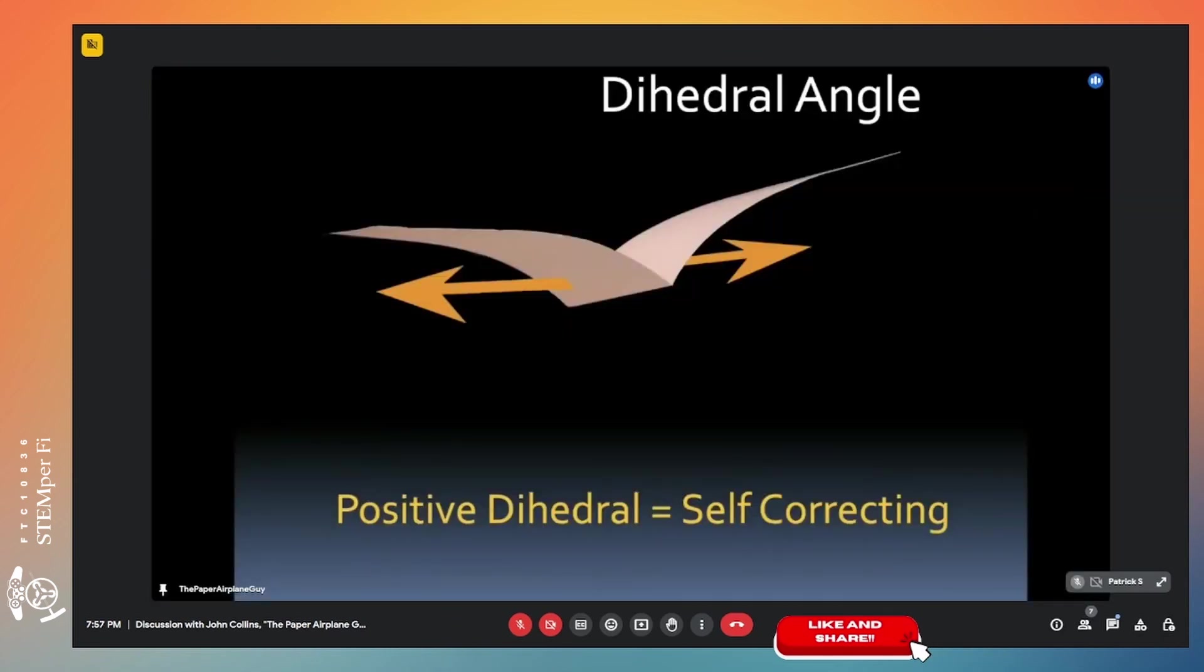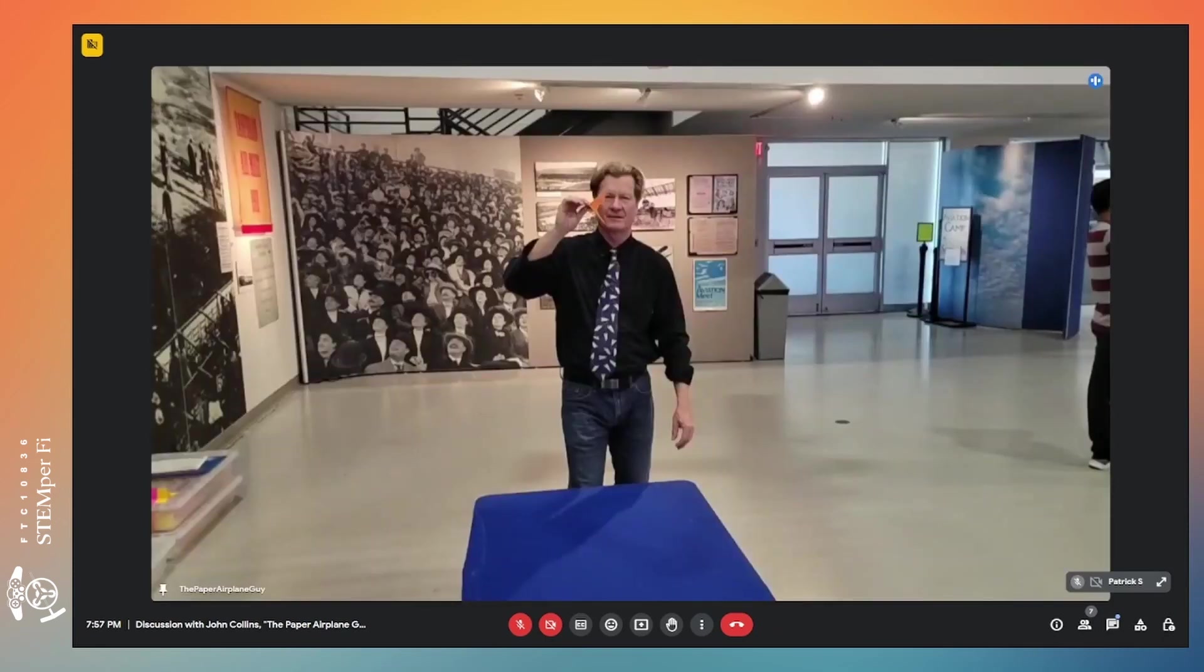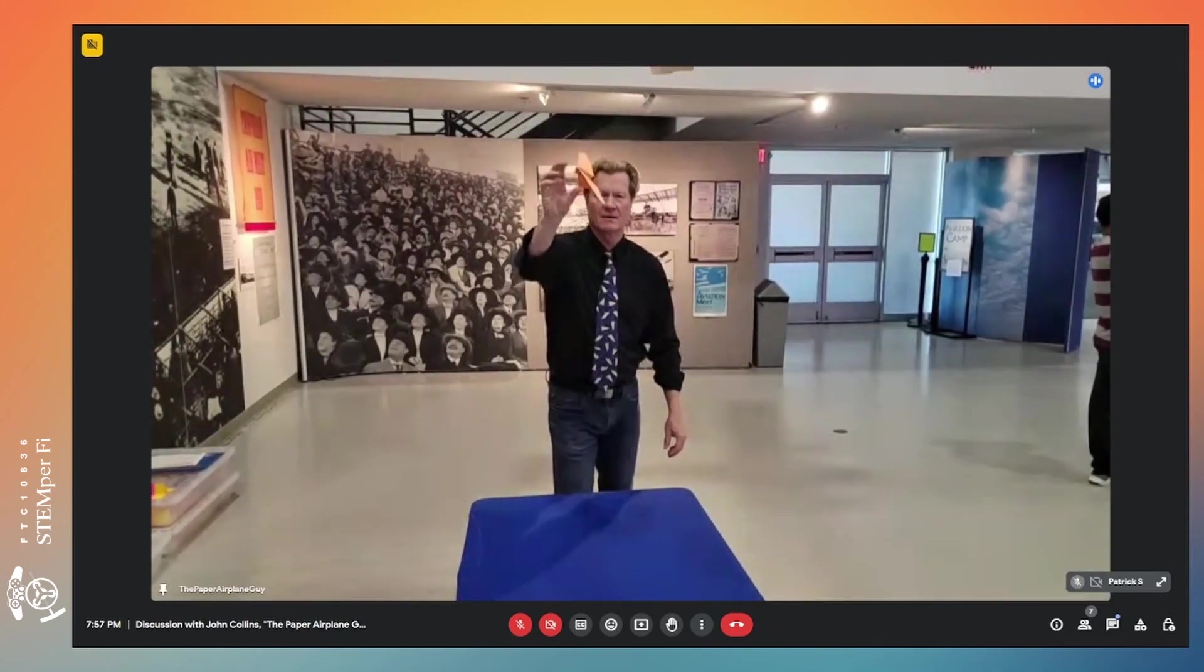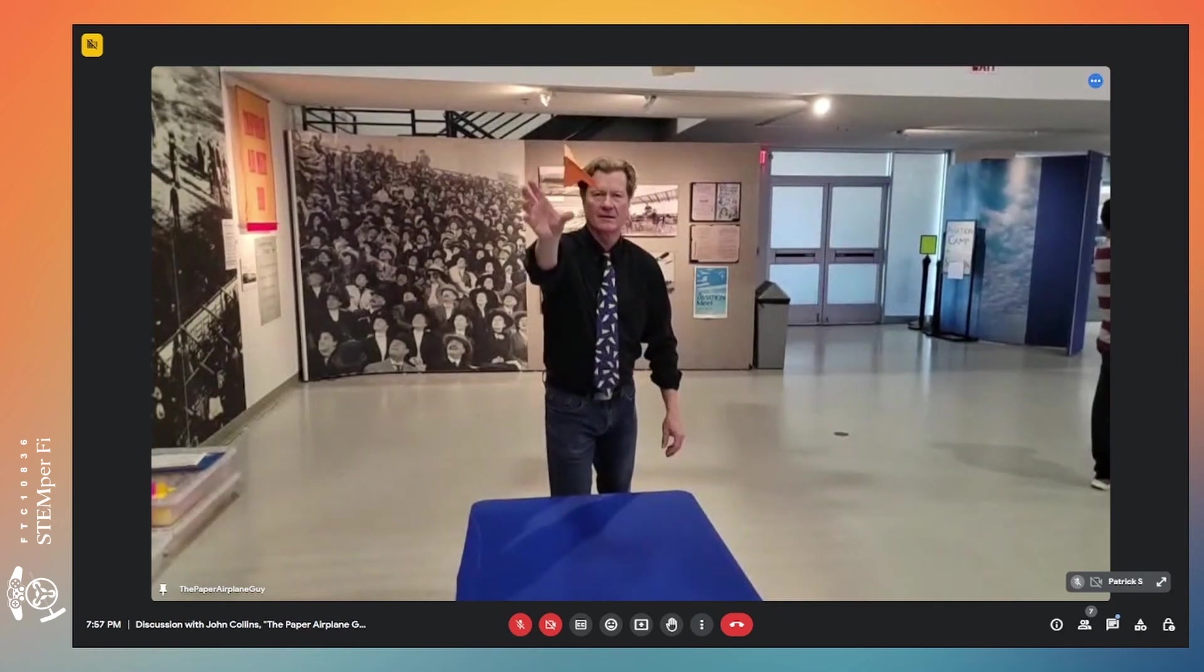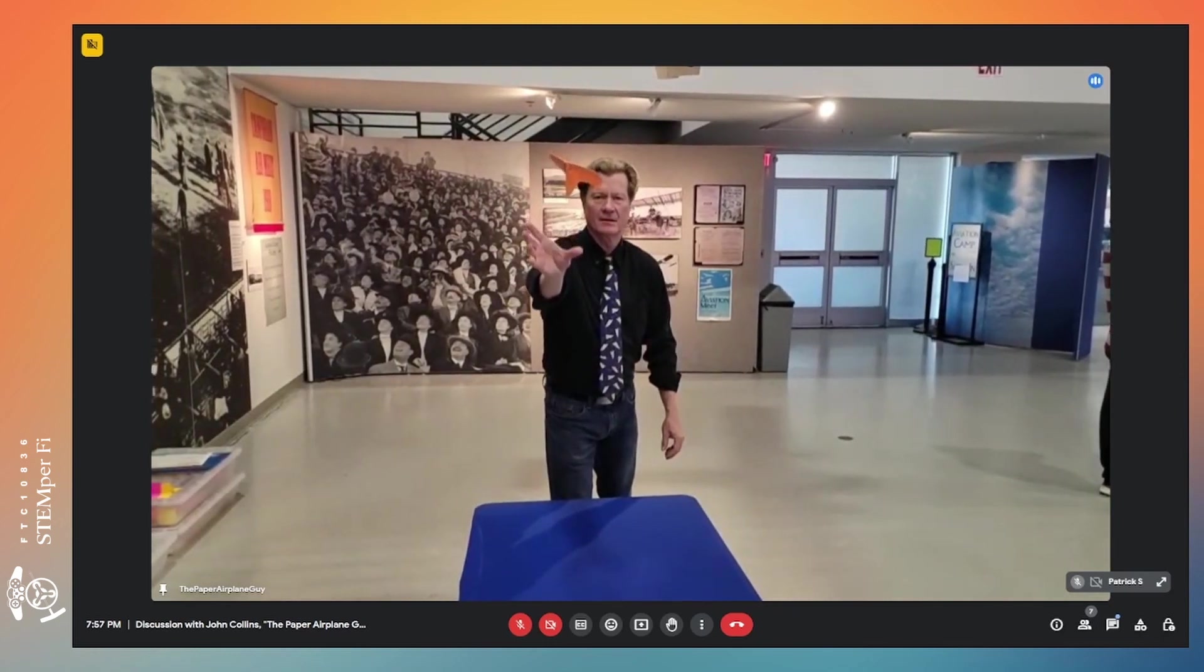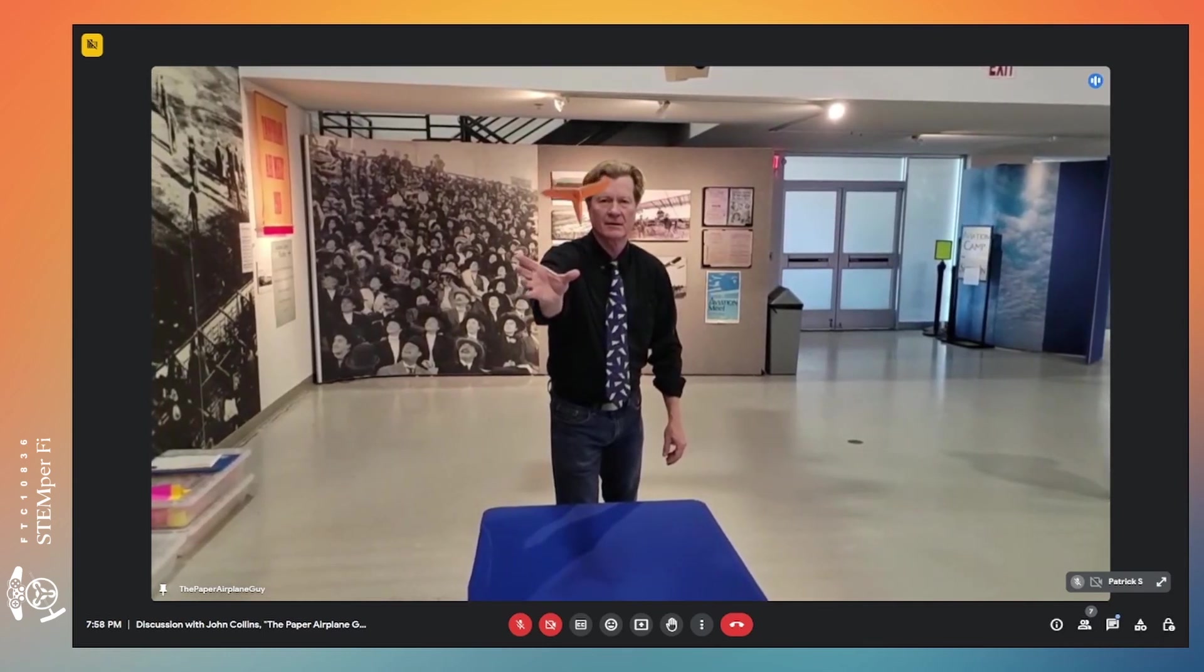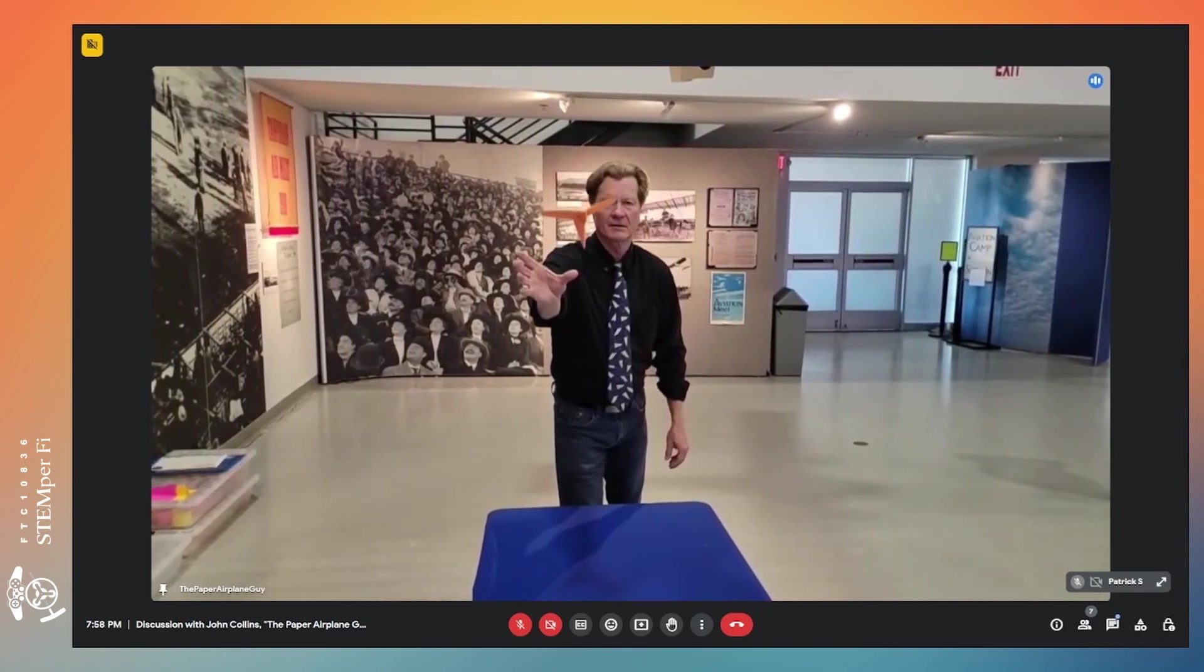If you've got a paper airplane where the wings are sloping upward like this and if you throw it leaned over, it's almost like having a weight on the end of a string. That weight from the body of the plane will just rock the plane back to neutral. The lifting surface is up over where that weight is and so the plane swings back to neutral.